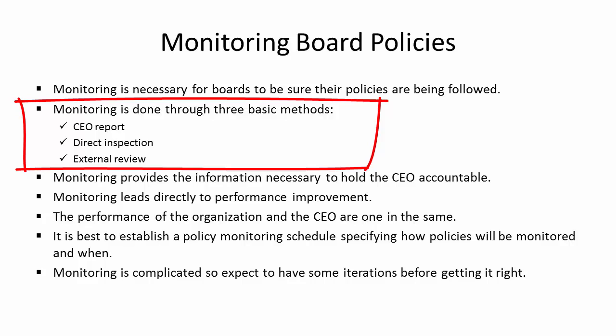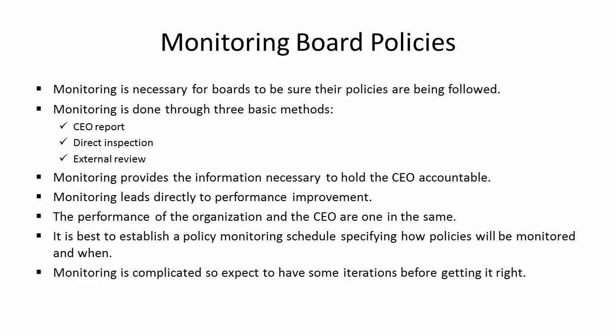For example, if the board has a policy saying that the CEO shall not fail to operate without a succession plan, a board member or the board could ask for that succession plan and actually look at it to see whether it's sufficient or not. The third method is the external review — an excellent example would be your annual financial audit, where you have an outside accounting firm come and look at the books and attest to their accuracy.